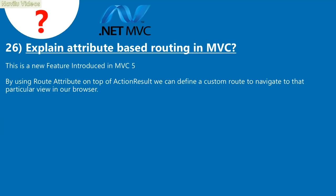Question 26: Explain attribute-based routing in MVC. This is a new feature introduced in MVC 5. By using the Route attribute on top of an action result, we can define a custom route to navigate to that particular view in the browser.